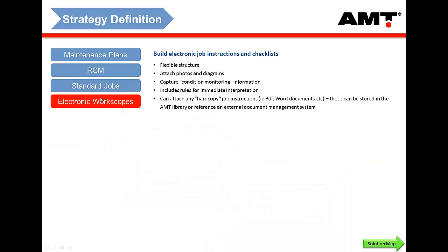There are also electronic work scopes — meaning job instructions or check sheets. In AMT, you can build up electronically your check sheets and job instructions, or you can just attach documents such as Adobe or Word documents, so that every time that job is scheduled, those job instructions appear and will automatically print out when the planner prints his job folder.